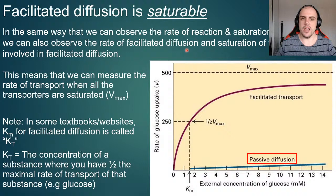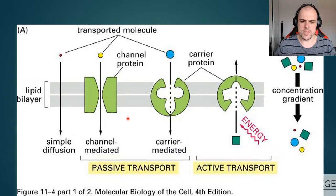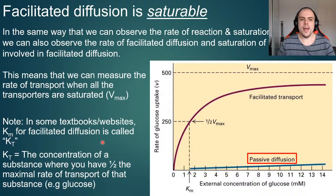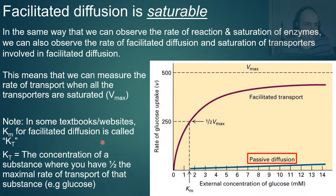Both channel-mediated and carrier-mediated transport are types of facilitated diffusion — they need one of these two proteins to move from outside to inside the cell. An important feature of facilitated diffusion is that it is saturable. There is a lot of overlap here with enzymes: we can look at a transport protein and the rate at which it transports, and this follows a similar method to the Michaelis-Menten equation. We have Vmax — the maximum rate at which the substance is being transported.